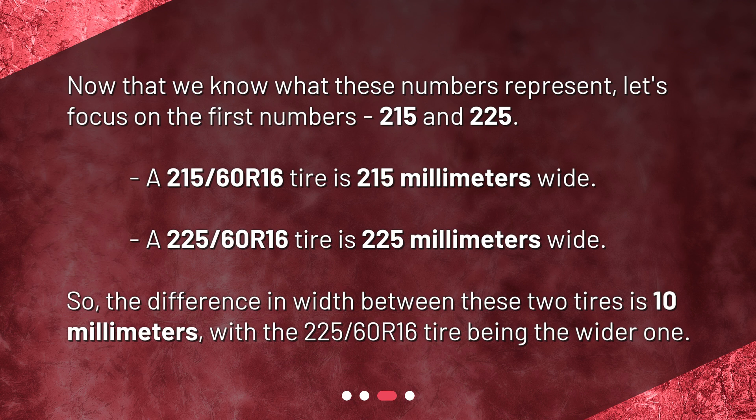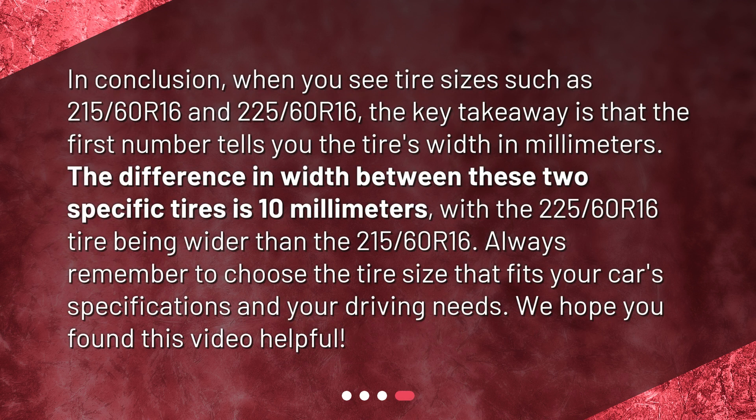In conclusion, when you see tire sizes such as 215/60R16 and 225/60R16, the key takeaway is that the first number tells you the tire's width in millimeters. The difference in width between these two specific tires is 10 millimeters, with the 225/60R16 tire being wider than the 215/60R16. Always remember to choose the tire size that fits your car's specifications and your driving needs. We hope you found this video helpful.